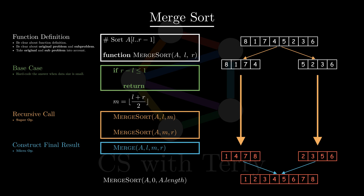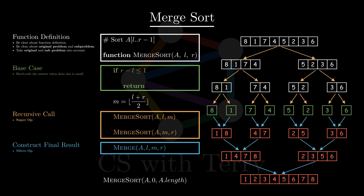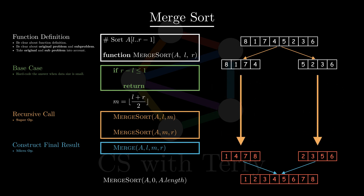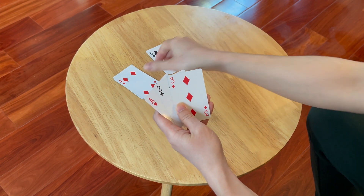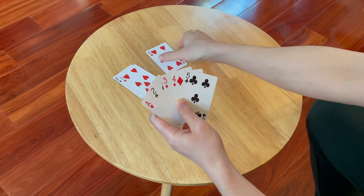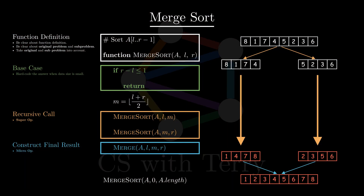Why do we call recursive calls super operations? The recursive call here solves the subproblem — sorting the left and right subarrays respectively. However, sorting them is not a one-step operation; it involves further calls to the recursive function. Therefore, we call the recursive call step a super operation. Why do we call the constructing final result step a micro operation? This step calls the merge function, which merges two sorted arrays into one sorted array. The merge function does not involve complex recursions, but only completes a simple task, so we call it a micro operation.